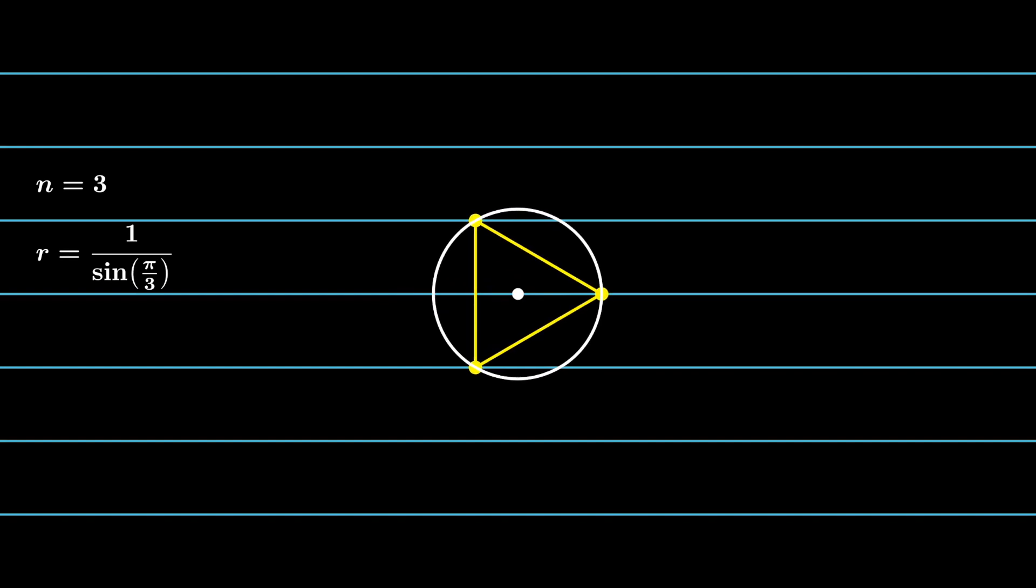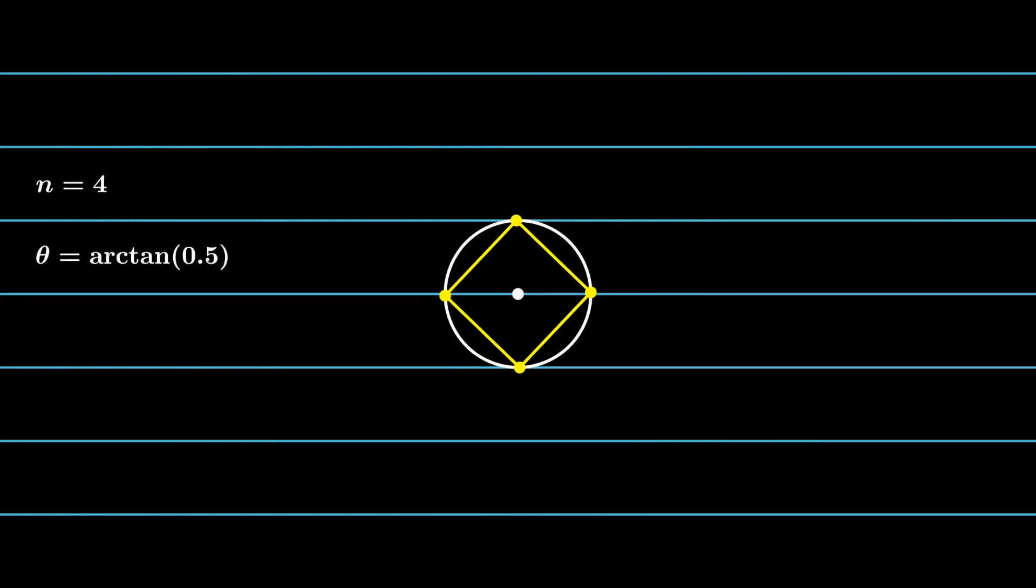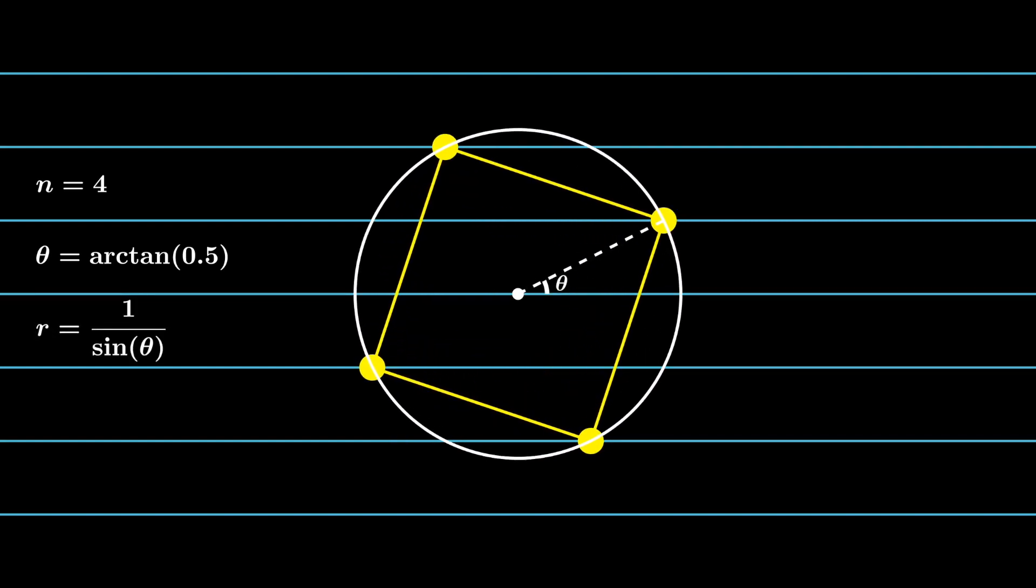We start from the unit polygon. For n equals 3, we just need to scale it properly. For n equals 4 and 6, we need to first perform a rotation, then scale it. You could visually check that all the vertices lie on different lines. I hope you enjoy the animation and the solution. See you next time. Bye!